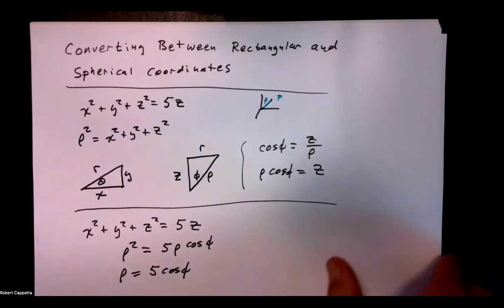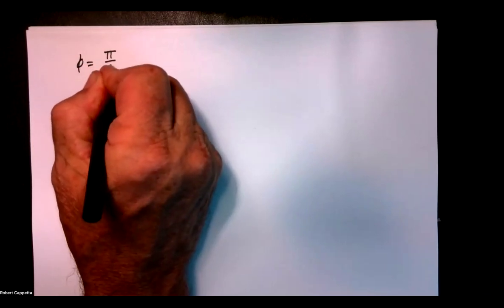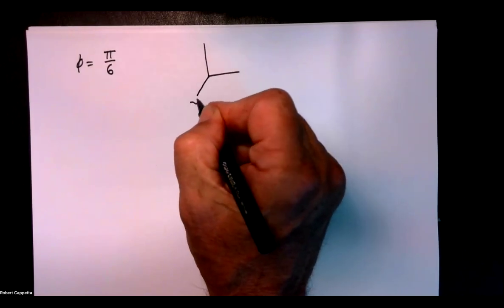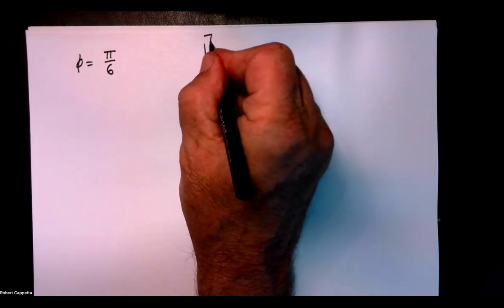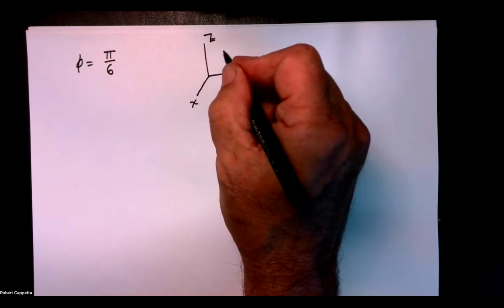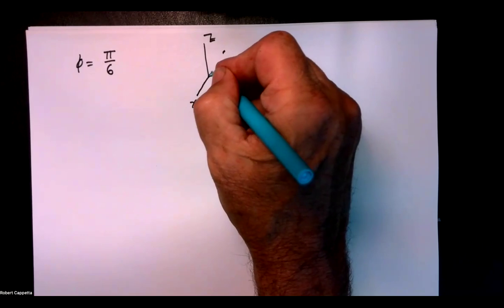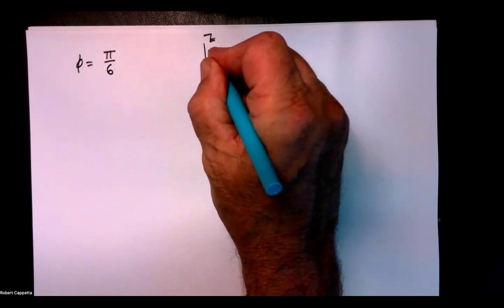Now let's go the other way. Let's start with something in spherical coordinates and convert it to rectangular coordinates. This time I'm going to say phi equals pi over 6. Think about what that shape will be. Remember, phi is the angle that is made with the z-axis. So here's x, y, z. If we have a point P, we're saying the angle made with the z-axis is pi over 6, or 30 degrees.